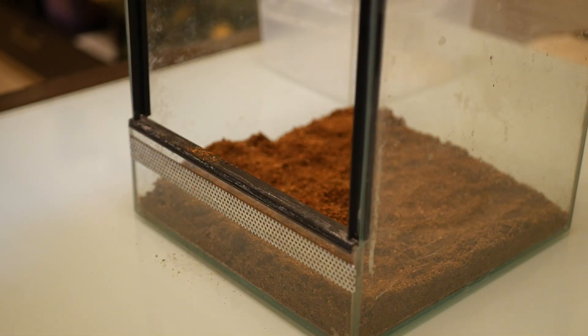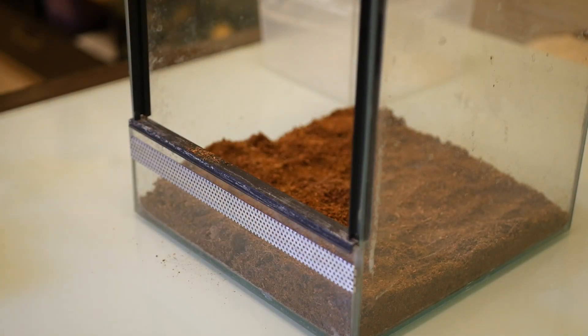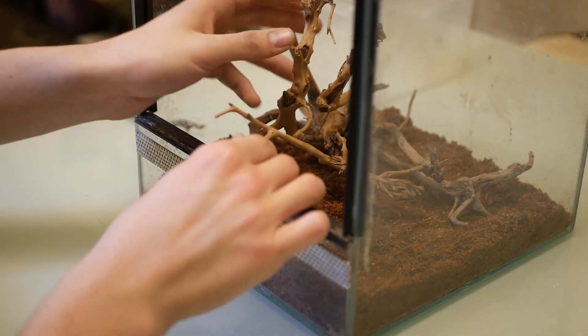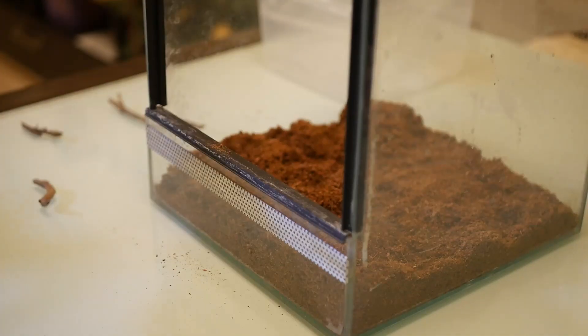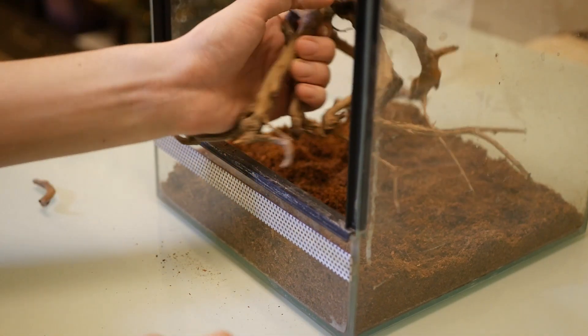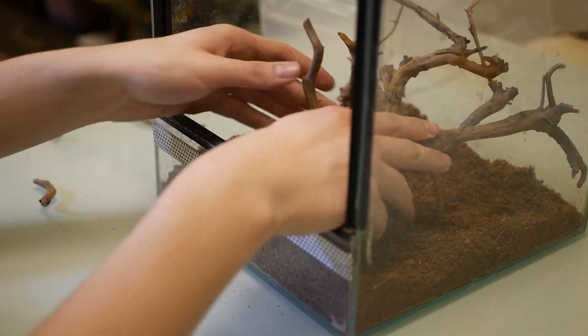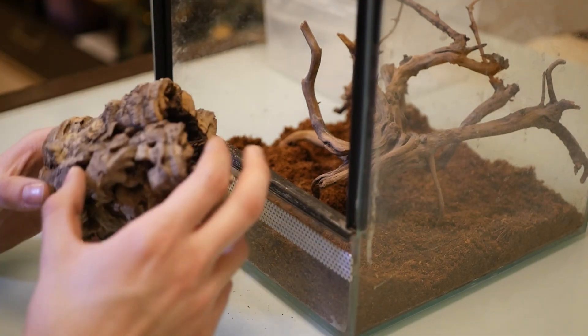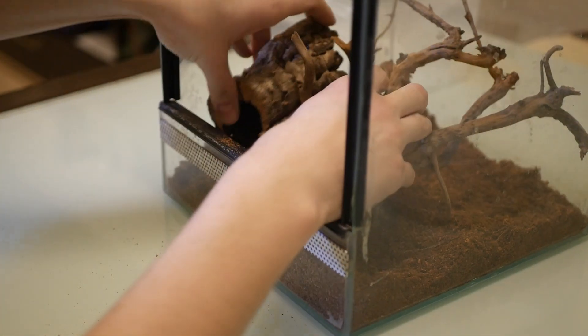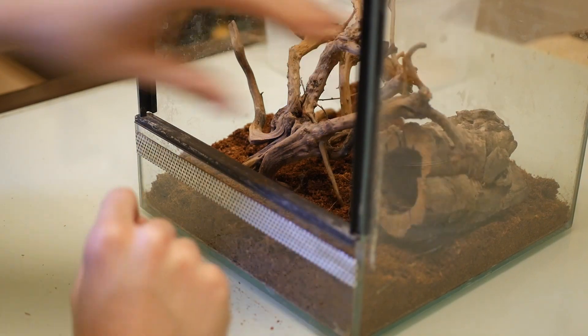So we have the peat added. Here I have a prepared branch. Let's see if we can fit it in somehow. I see not really. Need to break it up a bit. Maybe something like this? Oh, it can work like this. So we'll transfer it somewhere here. Let's try to throw in a tube somewhere to provide a hiding place. Maybe we can even reconcile this somehow.